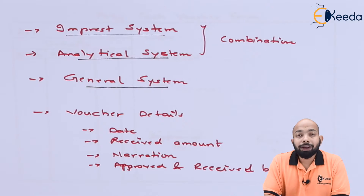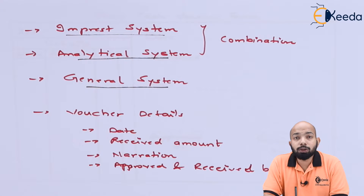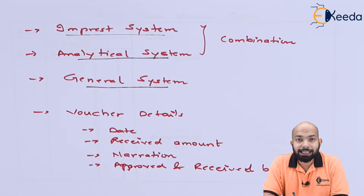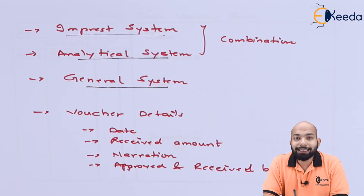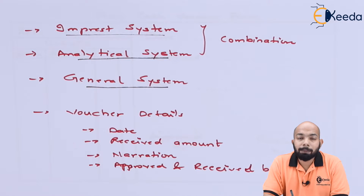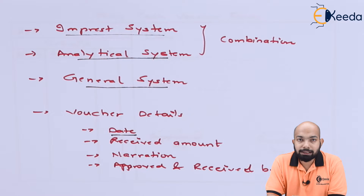We have different systems to handle petty cash: the imprest system, analytical system, and general system — these are methods of recording petty cash vouchers and transactions. A specific petty cash voucher is also used. The details to be recorded in a petty cash voucher include: first, the date — the date of the transaction when it took place.